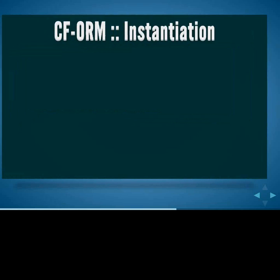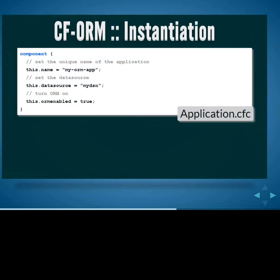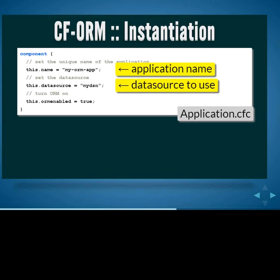So how do you use ORM? Here's the application.cfc. If you're using application.cfm, this won't work — you will need application.cfc, though Data Manager will work with application.cfm. All you do is set the name of your application as you normally would, set the data source — a new feature in ColdFusion 9 which also applies to queries, so you don't have to put the data source attribute on every query. And then finally, you need to turn ORM on. By default it's off, and it uses a normal data source just like in the ColdFusion Administrator, so there's nothing special you need to do there.